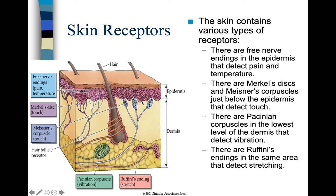Most of the nerve endings are in the dermis, the second layer of your skin. You've got an outer covering called the epidermis, and then you have your dermis, which is the second layer.